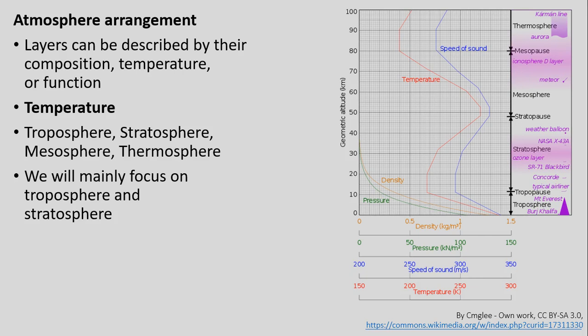The troposphere is the lowest layer. Moving up, we have the stratosphere, mesosphere, and thermosphere. We can see that on the image here with a red line tracing temperature. Through the troposphere, temperature generally decreases as we go up in elevation, then levels off with a slight increase in the stratosphere, then decreases again in the mesosphere as we go further out.